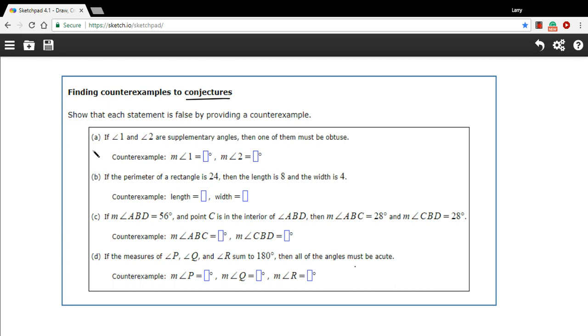Let's take a look at A. It says if angle 1 and angle 2 are supplementary, and that means they add up to 180 degrees, then one of them must be obtuse. Obtuse means greater than 90. So can we think of a situation where two angles add up to 180 but neither one is greater than 90?